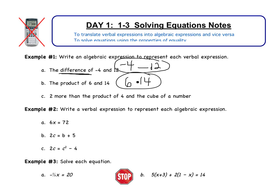Part C is where it gets more difficult: two more than the product of 4 and the cube of a number. 'More' means add, so I'm going to be adding 2 to something. 'Product' means multiply, so I'll have 4 multiplied by the cube of a number — that's x cubed. So the full expression is 2 plus 4x cubed. That was example 1.